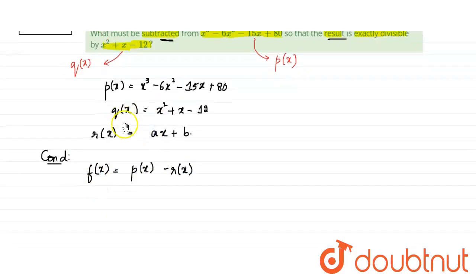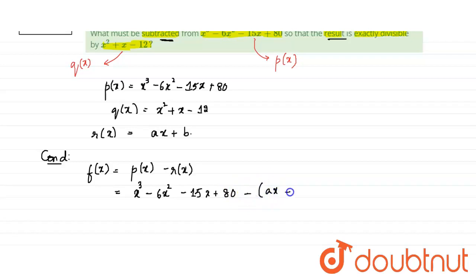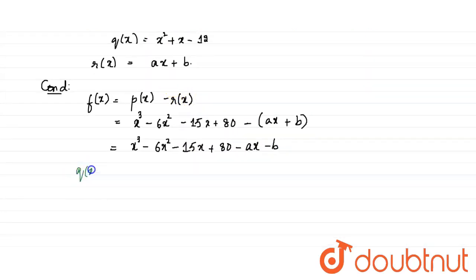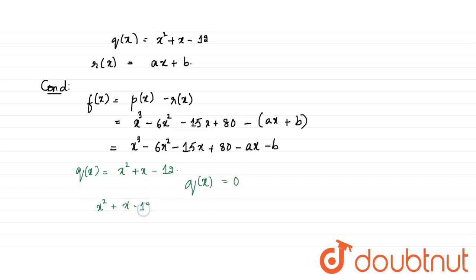So the condition given is that we will get some polynomial F of x which equals P of x minus R of x, and this F of x should be divisible by Q of x. First let us find F of x. F of x equals P of x, which is x cubed minus 6x squared minus 15x plus 80, minus Ax plus B. Now we have our Q of x equals x squared plus x minus 12.